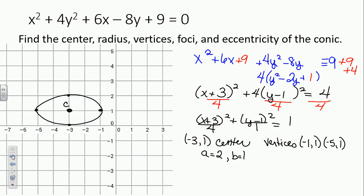The only things left to find are the foci and the eccentricity. This isn't a circle, so it will not have a radius. To find the foci we need to find c. c squared is a squared minus b squared — ellipses have a plus in between, so the c squared formula has a minus. We take 2 squared and subtract 1 squared, so c equals square root of 3.